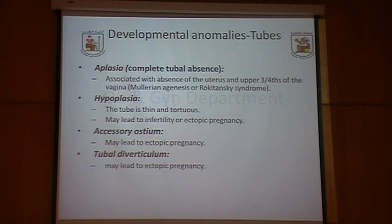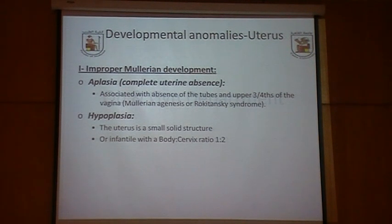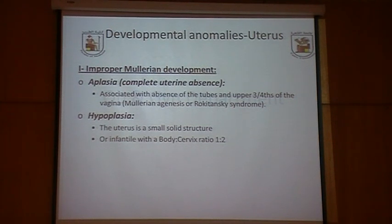Tubal development usually follows uterine development closely, so abnormalities in the tubes without uterine involvement are very rare. We can have aplasia, hypoplasia, accessory ostium, or tubal diverticulum, but these are very rare in isolation. Uterine anomalies are more common and include Müllerian aplasia where the uterus is completely absent — known as Mayer-Rokitansky-Küster-Hauser syndrome — associated with absence of the tubes and upper four-fifths of the vagina. Hypoplasia results in a very small solid or infantile uterus with a body-to-cervix ratio of 1 to 2.